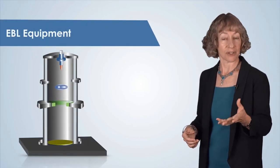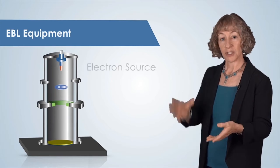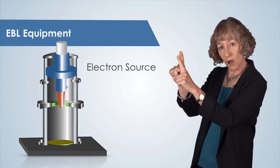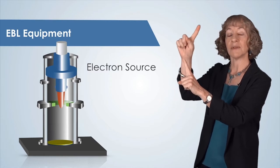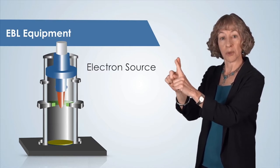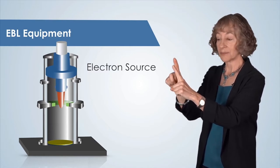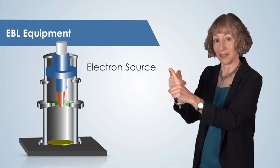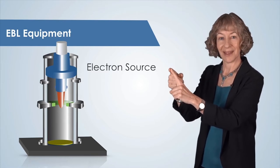The EBL is quite a complex instrument, but its basic components are as follows. There is an electron source, which is a small, sharpened tip that emits a stream of electrons when a high-voltage bias is applied. We call these emitted electrons the electron beam.